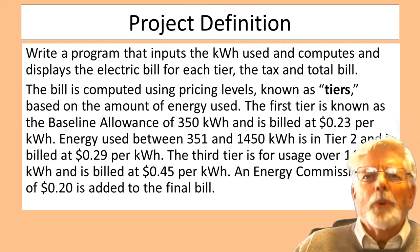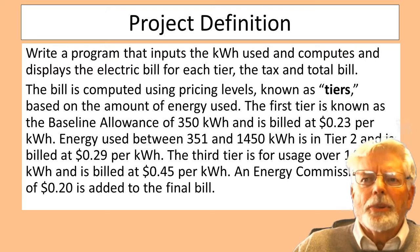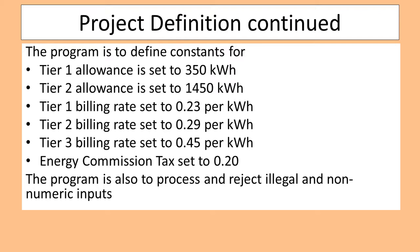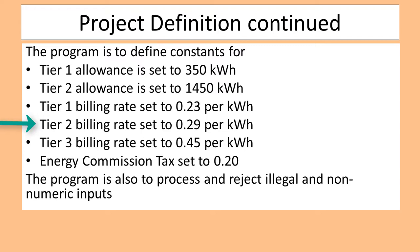The bill is computed using pricing levels known as tiers. The first tier is the baseline allowance of 350 kilowatt hours billed at $0.23 per kilowatt hour. Energy used between 351 and 1,450 kilowatt hours is tier 2, billed at $0.29 per kilowatt hour. The third tier is for usage over 1,450 kilowatt hours billed at $0.45 per kilowatt hour. An energy commission tax of $0.20 is added to the final bill. Constants must be defined for tier 1 allowance (350 kWh), tier 2 allowance (1,450 kWh), billing rates for tiers 1, 2, and 3, and the energy commission tax ($0.20).